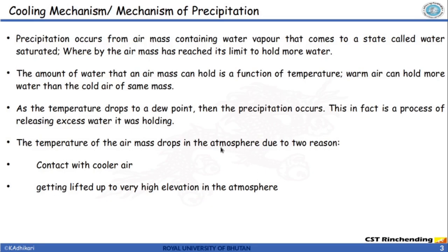Let's study about the mechanism of precipitation. Precipitation occurs from an air mass containing water vapor that comes to a state called water-saturated, whereby the air mass has reached its limit to hold more water. The amount of water that an air mass can hold is a function of temperature, which means warm air can hold more water vapor than cold air of the same mass. As the temperature drops to a dew point temperature, then the precipitation occurs. This is, in fact, a process of releasing the excess water it was holding.